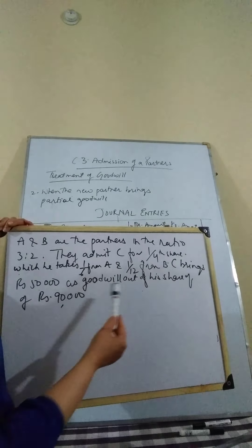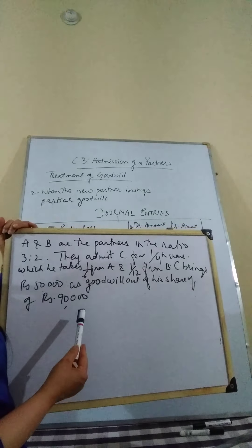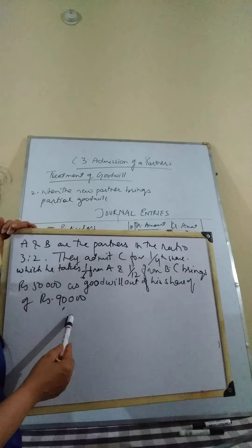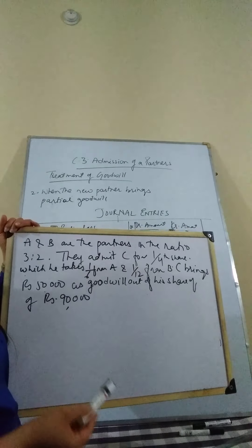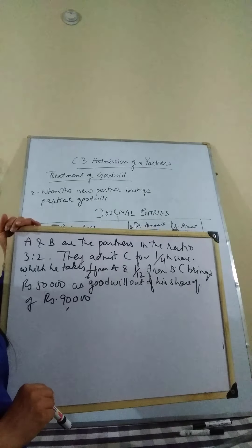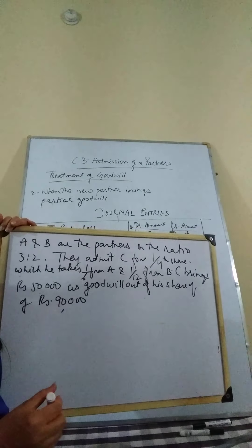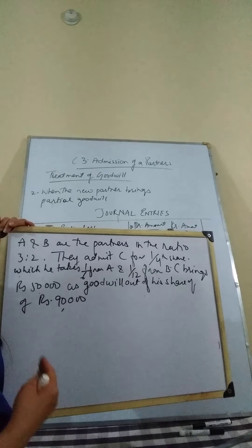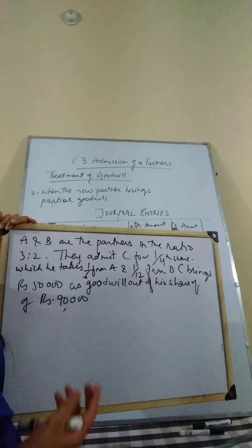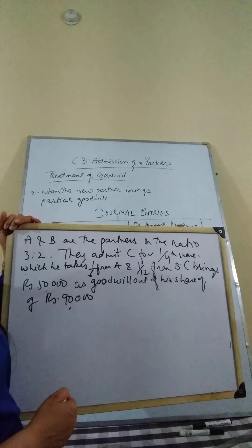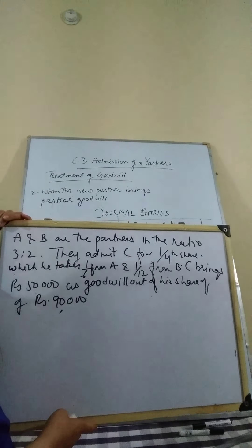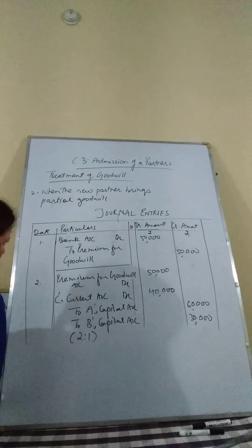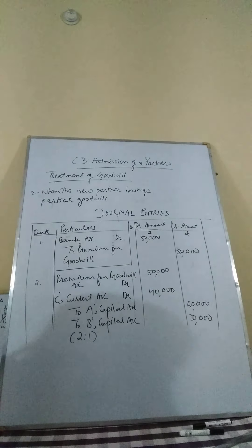C brings 50,000 as his goodwill out of his total share of goodwill, which is actually 90,000. He is bringing only 50,000 as his share of goodwill, not the entire 90,000. This means the goodwill is brought partially — a part of the goodwill is brought in cash and the remaining is not. So how are we going to treat this? Let us look at the journal entries.